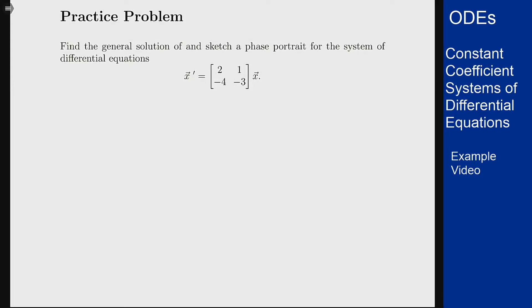In this example we want to find a general solution for a two component differential equation and sketch a phase portrait for that system. We have the matrix [2, 1; -4, -3].